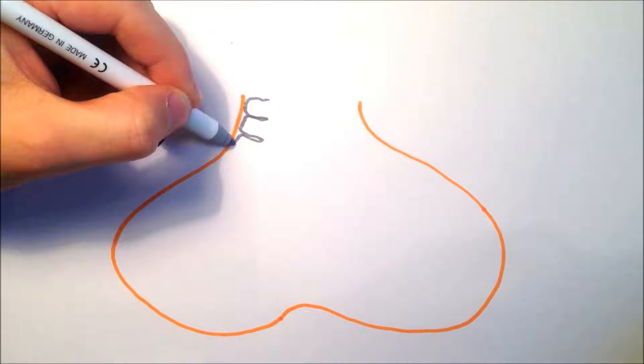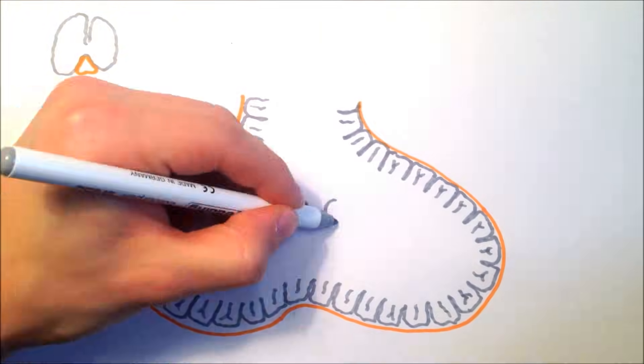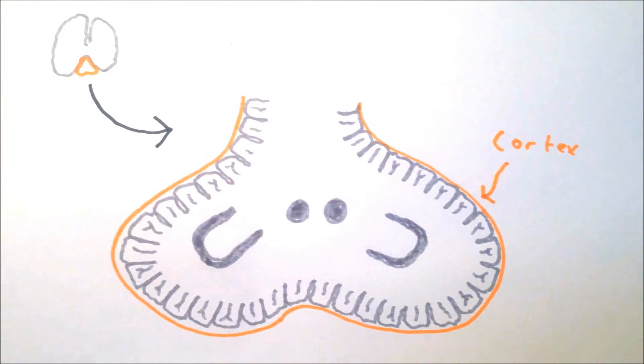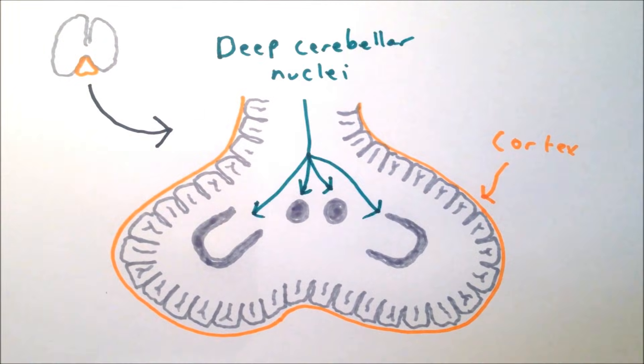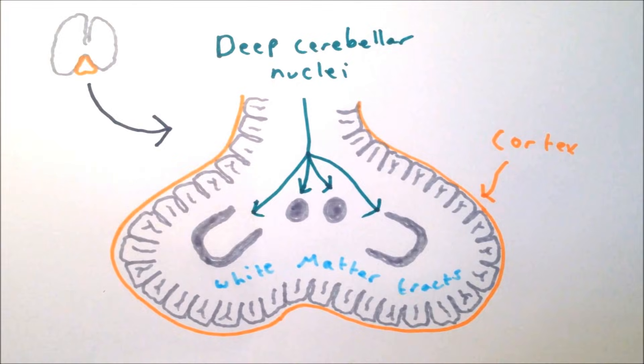If we cut through the cerebellum, we can see that it consists of a tightly folded layer of cortex, surrounding a collection of underlying cerebellar nuclei, connected by white matter tracts.